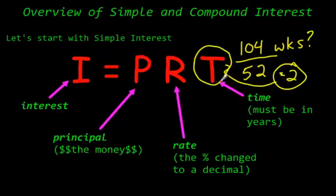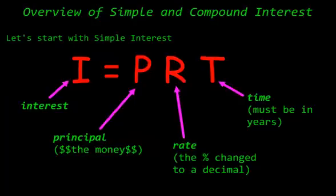So that's the only tricky part about this formula. You take the principal, which is the money, times the rate, which is the percent they give you, times the time, and the time has to be in years. I think you got it now, right? Okay.